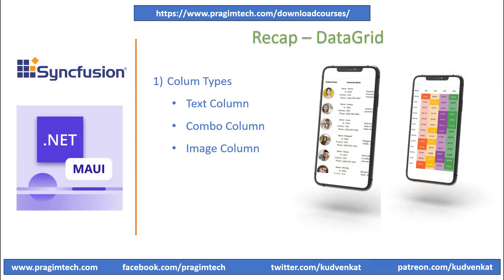Let's quickly review our previous session before we get started. In the previous session, we focused on column types and looked at combo box and text column for gender and other properties of the data grid. Using our CDN, we added the employee image and explored the default options for column sizing and generated our own custom column sizing to increase the width of one of the employee columns. We also understood how to freeze the panes and then grouped employee details by gender column.